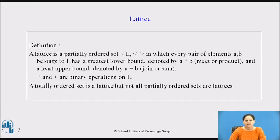A lattice is a partially ordered set (L, ≤) in which every pair of elements a, b which belongs to L has a greatest lower bound denoted by a*b, also called meet or product, and a least upper bound denoted by a+b, also called join or sum.